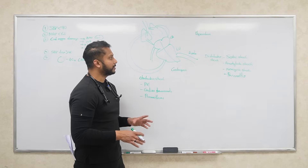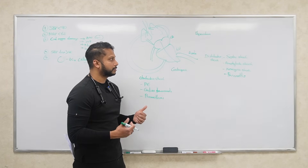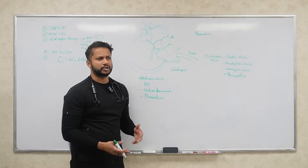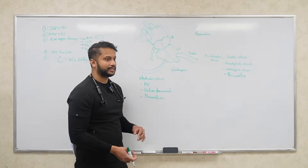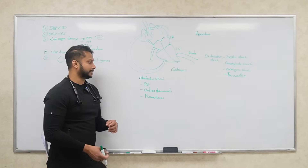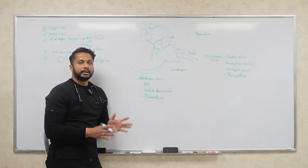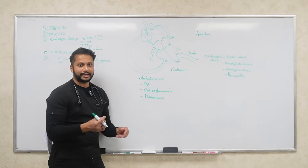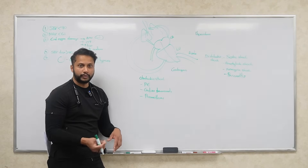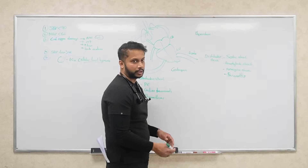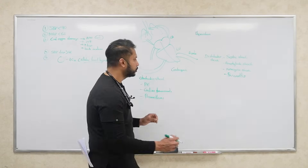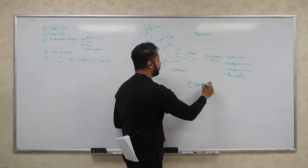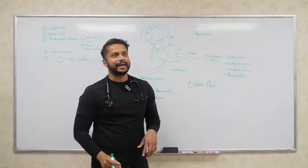So when you see a patient with shock, it could be many different things. The ones we commonly encounter are septic shock, pancreatitis-related distributive shock, cardiogenic shock, hypovolemic shock, and obstructive shock such as PE, cardiac tamponade, or pneumothorax. Bottom line: most patients in shock will appropriately receive fluids.